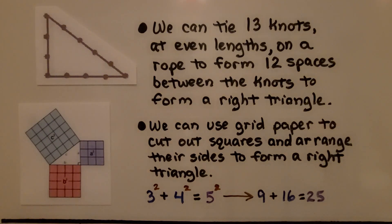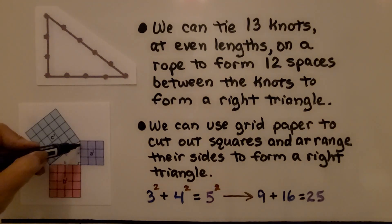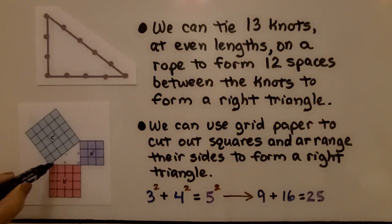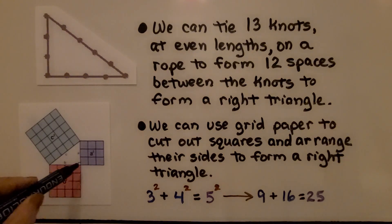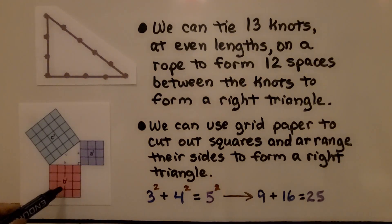We can use grid paper to cut out squares and arrange their sides to form a right triangle. We have 3 units here, 4 units here, and 5 units here. But if you look, 3 squared is 9, 4 squared is 16, and 5 squared is 25.